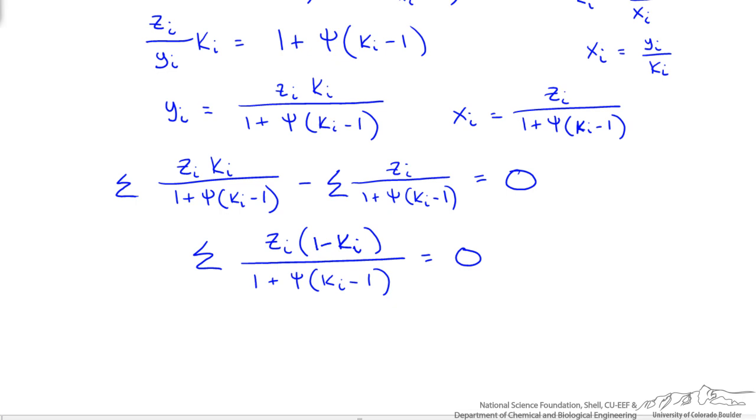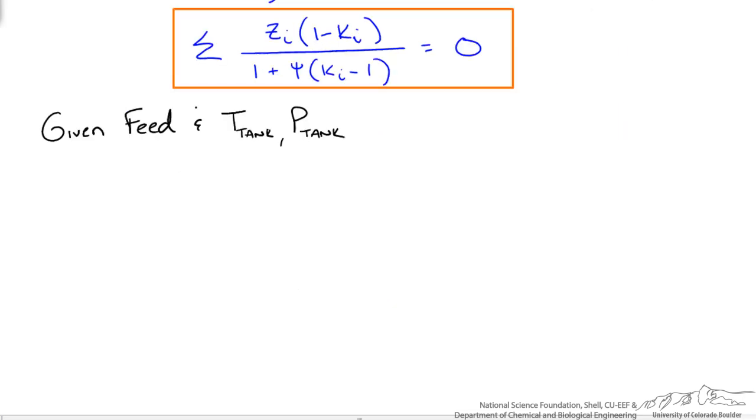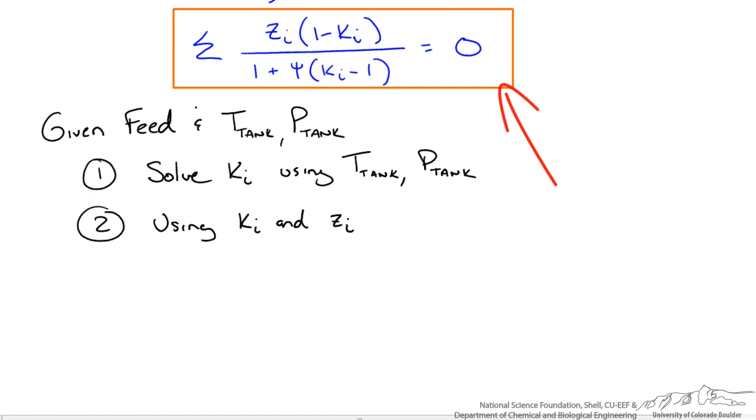So what does this mean? Say we are given a flash separation problem. The first thing we do, if we are given the temperature of the tank and the pressure of the tank, then we know we can look up the k values at a given temperature and pressure for our components. Using our k values and our composition of the feed, we plug that in and we iteratively solve for psi such that we equate all of the components to 0. The rest of it falls in place.